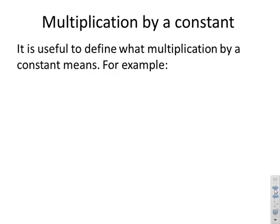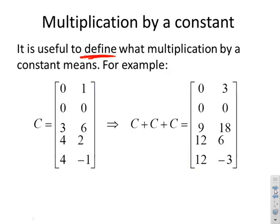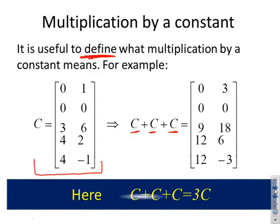Multiplication by constant. It's useful to define what multiplication by constant means when you do it for matrices. I'm going to start with a slow example. Let's assume I had C, and then I did C plus C plus C. That's just matrix addition, but it's not too much of a stretch to say C plus C plus C is the same as writing 3 times C. You'll see implicitly I've multiplied every element by 3. This is how matrix multiplication is interpreted.